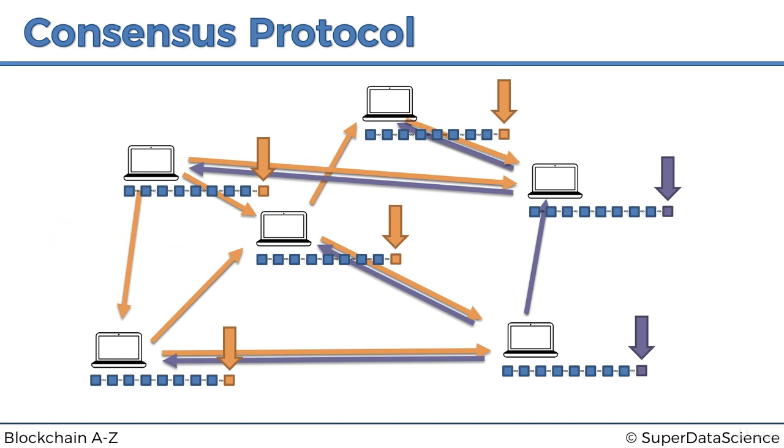That's why we need Byzantine fault tolerance. So what's the consensus protocol in blockchains? Remember with the generals, their consensus protocol was to look at the average of what you're getting, the average of the messages you're getting, and then do that. Somebody's saying attack, somebody's saying retreat, and then decide from there. Take the majority—not the average, the majority—look at the majority of the messages that you're getting and then do that.